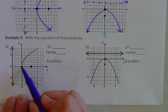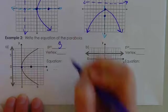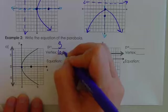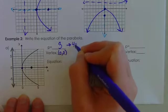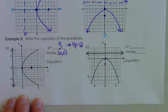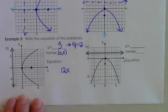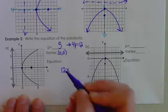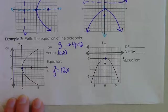The first thing I'm going to do is count: 1, 2, 3 units — so P is going to be positive 3. The vertex is at (0,0). If P equals 3, then 4P equals 12. So I'm going to put 12 with the x, because I moved in the x direction for my focus. Then I set that equal to y squared, and I don't need y minus 0 or x minus 0 since the vertex is at the origin.